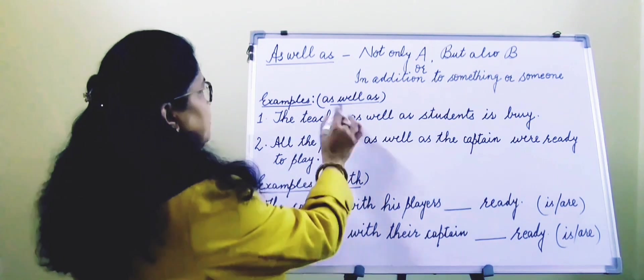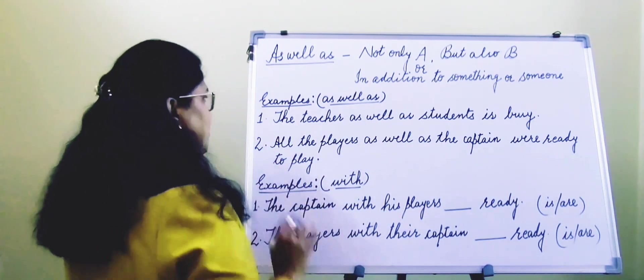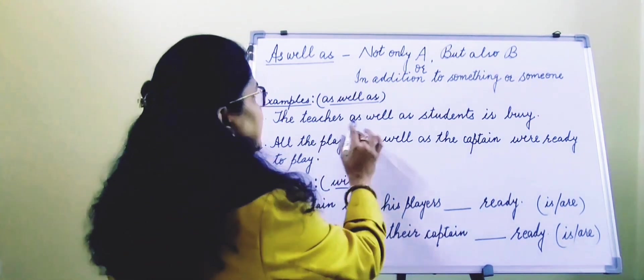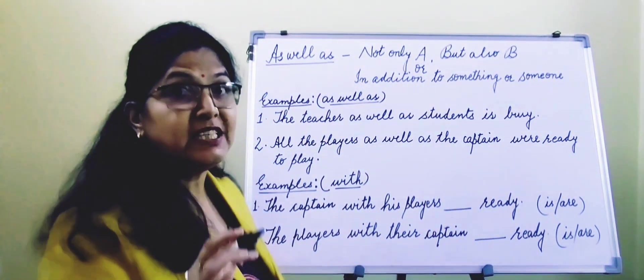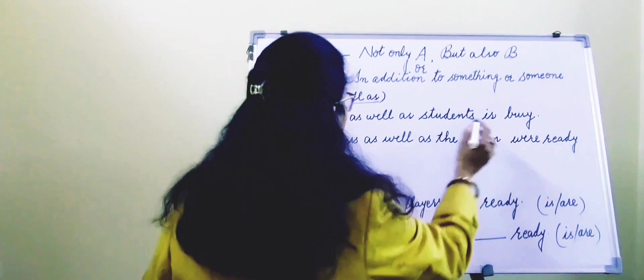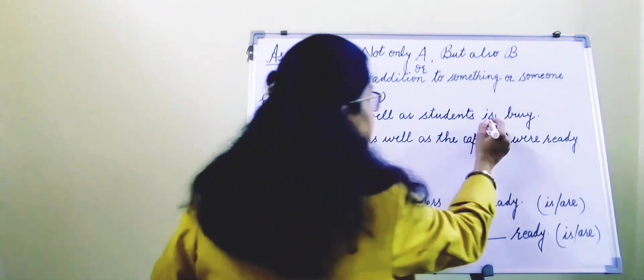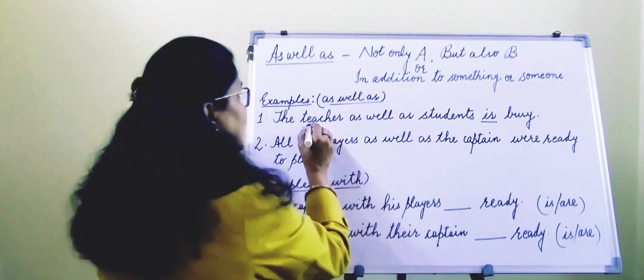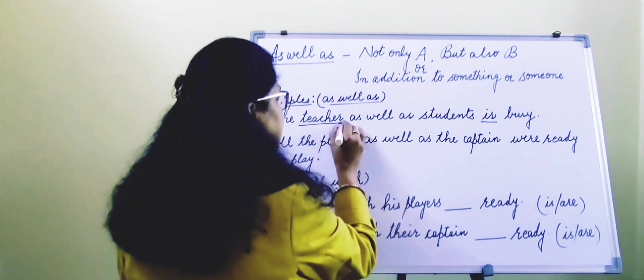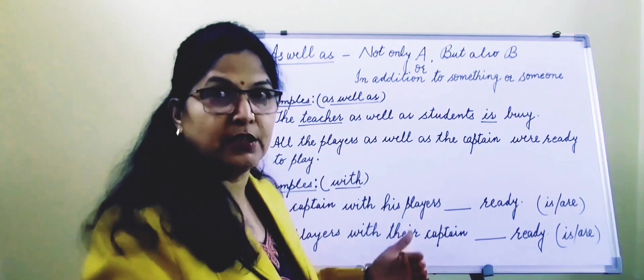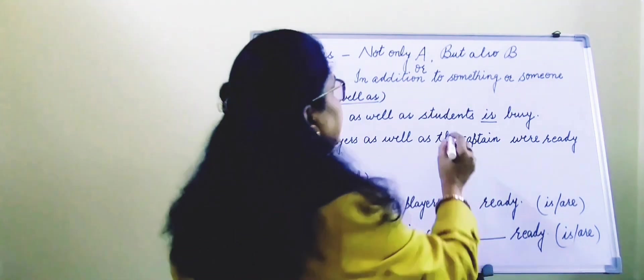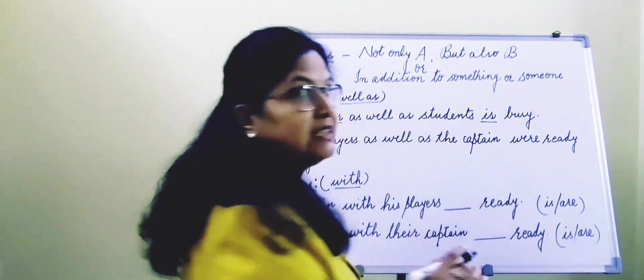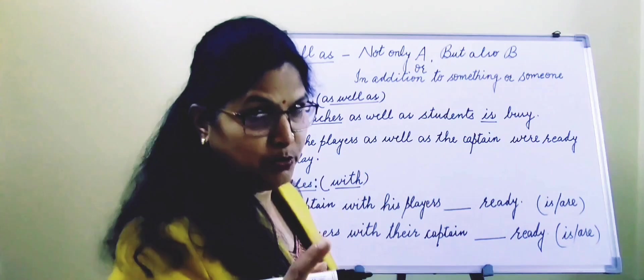The examples of as well as. Number one, the teacher as well as students is busy. Why is? Because the verb will agree with this first subject which is teacher, and teacher is singular. So verb will be singular. Here, verb will not be according to the nearest subject that is students, and it is plural.